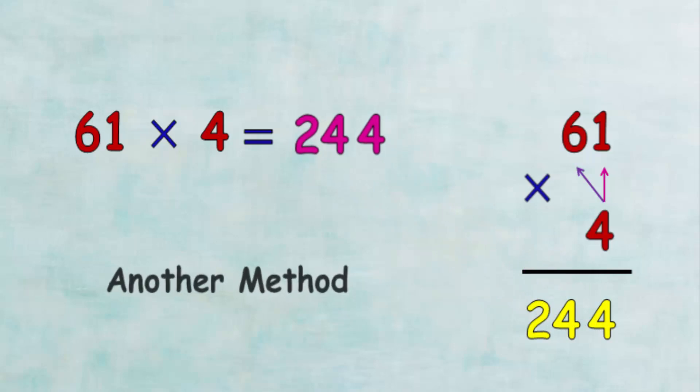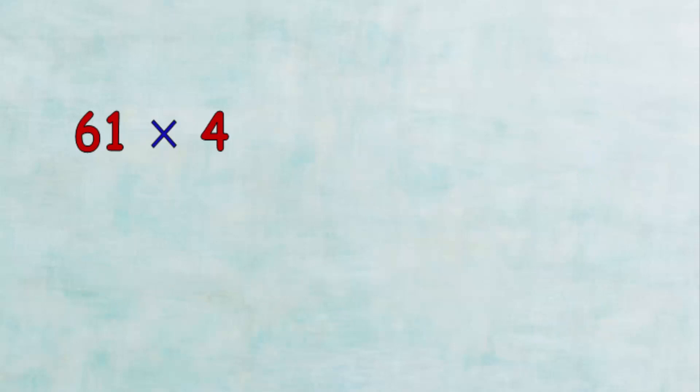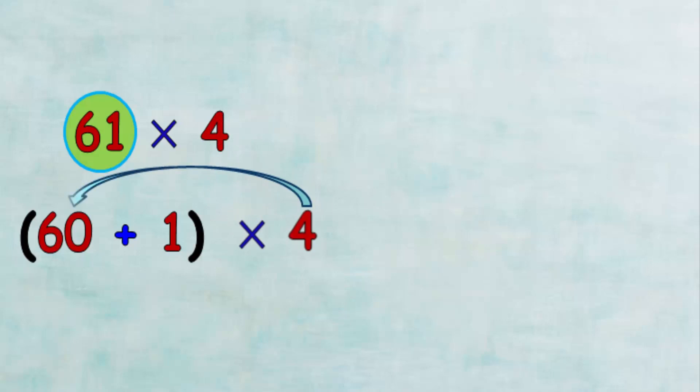Let's see another way to solve it. When we expand 61, we have 60 plus 1. Then multiply 4 by 60, which equals 240.